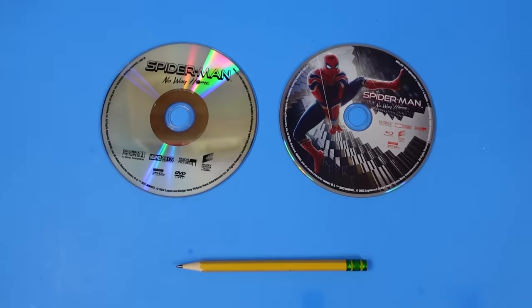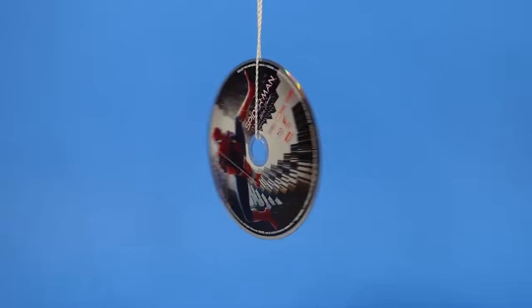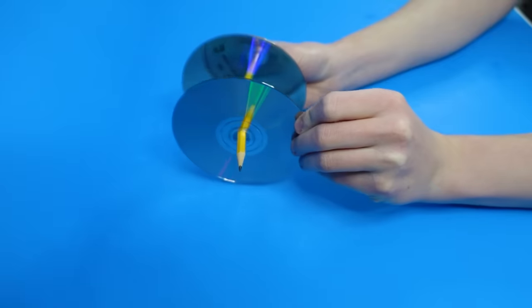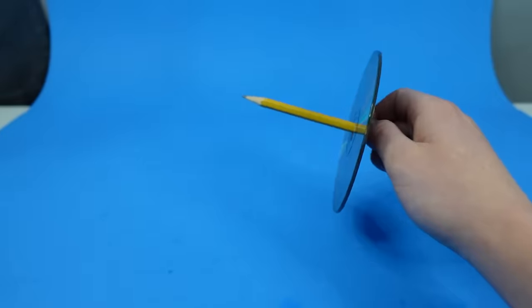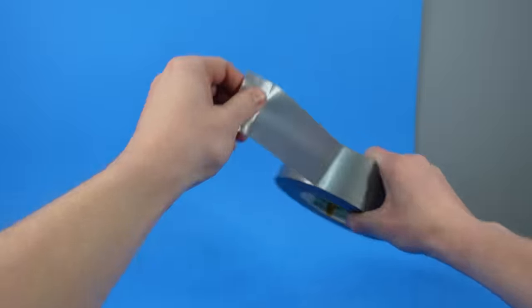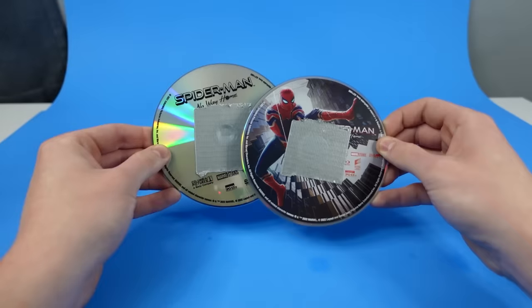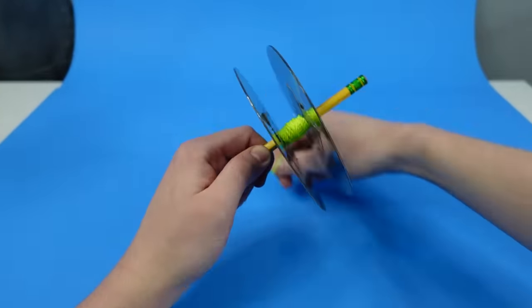And for the axle, we could just use a pencil again. But this is going to be difficult because these discs are incredibly thin and lightweight. But the real problem was that they weren't held on tight enough to the pencil and they kept sliding off. So as a workaround, I put duct tape on both sides of the discs to cover the hole in the center. Now I could push the pencil through the tape without the disc falling off.